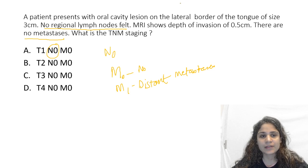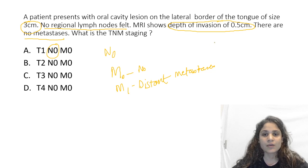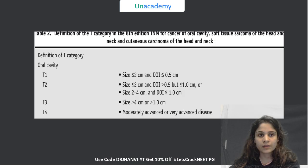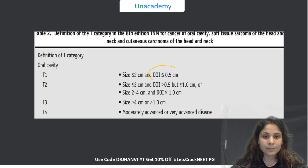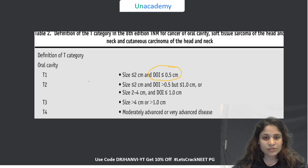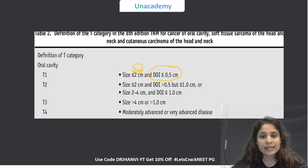The size of the tumour is 3 cm and the depth of invasion is 0.5 cm. Initially, the TNM staging of oral cancers was only according to the size of the tumour. The new change is that depth of invasion has been added to this staging. T1 is essentially size less than or equal to 2 cm — if the tumour size is exactly 2 cm, it still falls in T1. It should also have a depth of invasion less than or equal to 0.5 cm.